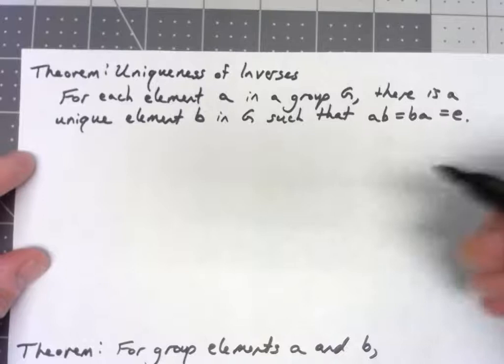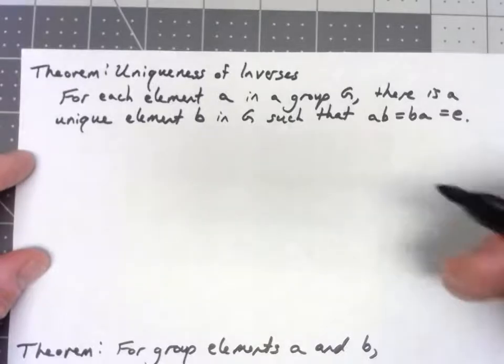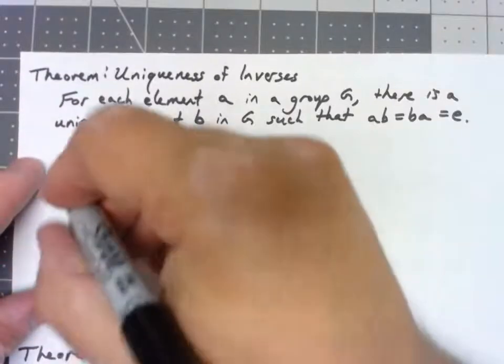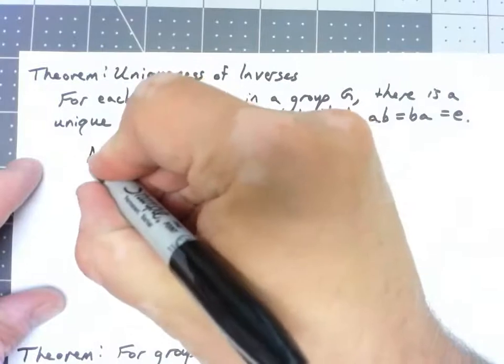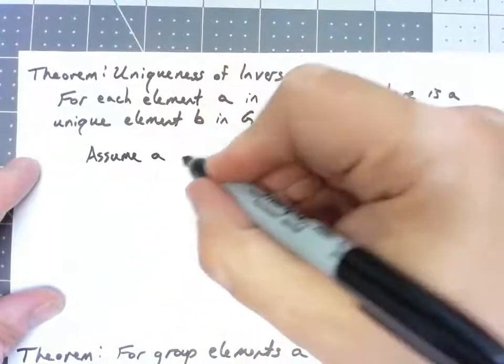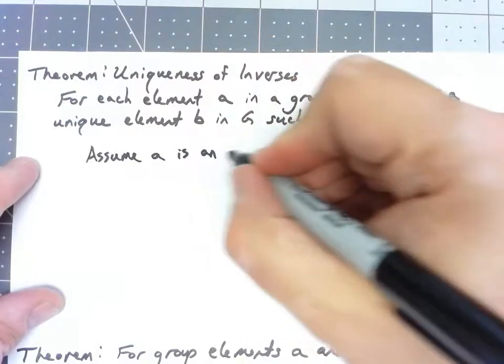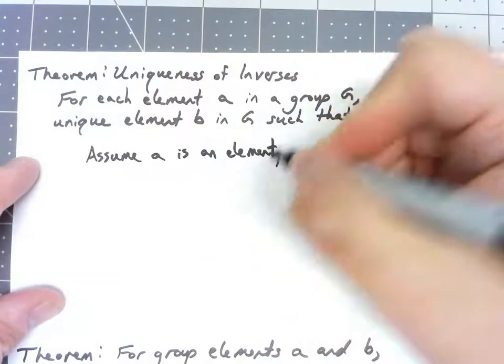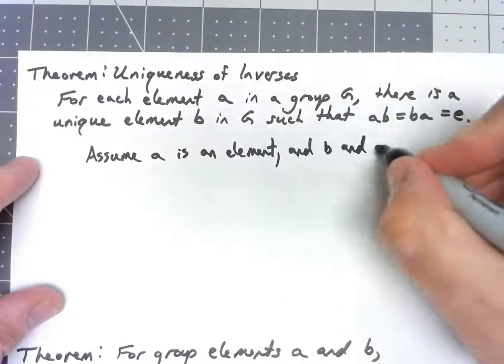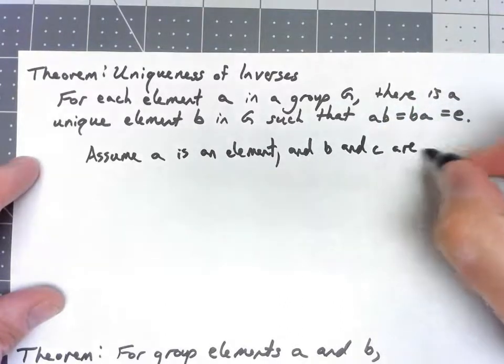Similar to how we proved it for the identity, let's assume that we have two different inverses for something. So let's assume A is an element and B and C are both inverses.